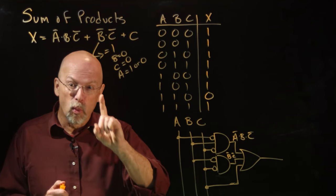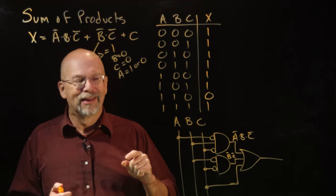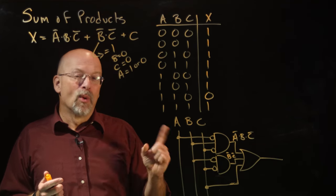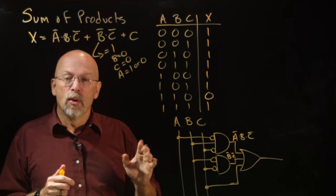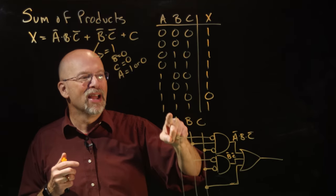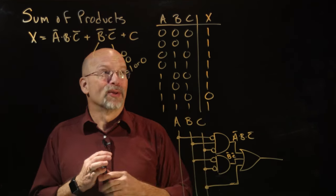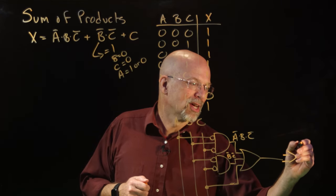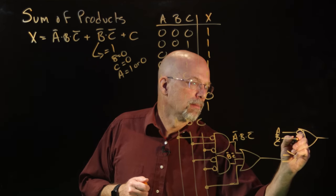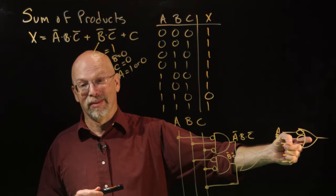We know that a product has exactly one row where there's a 1 in it. A sum has exactly one row where there's a 0 in it. This expression could actually be represented with just a sum. A sum outputs 0 when all inputs are 0. If I invert A and invert B going into an OR gate with C straight in, I get A-bar OR B-bar OR C — which is the same circuit, but just a single OR gate with A inverted, B inverted, and C straight in.